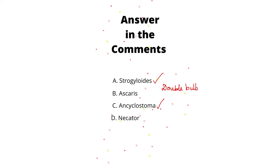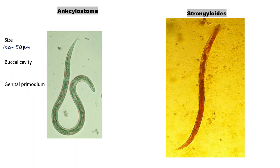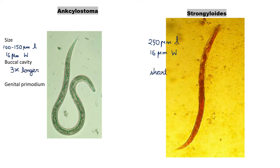So how can we differentiate them? It's very easy — it depends on the size of the larva, the size of the buccal cavity, and the genital primordium. Ankylostoma is comparatively shorter than Strongyloides, while the width remains the same. The buccal cavity of Ankylostoma is three times longer than Strongyloides. In Strongyloides, the buccal cavity is shorter. The genital primordium of Ankylostoma is less prominent and small, while in Strongyloides it is prominent and large.